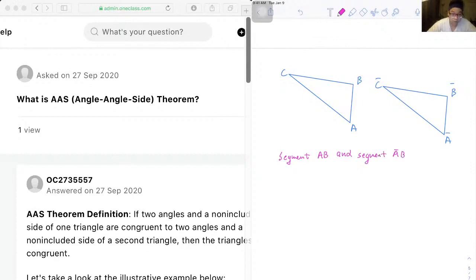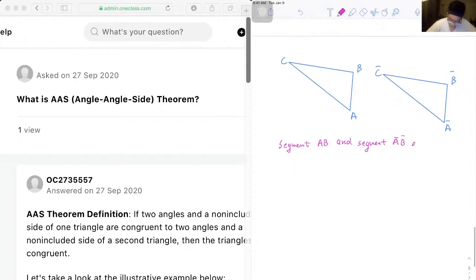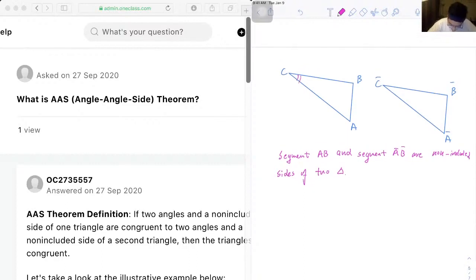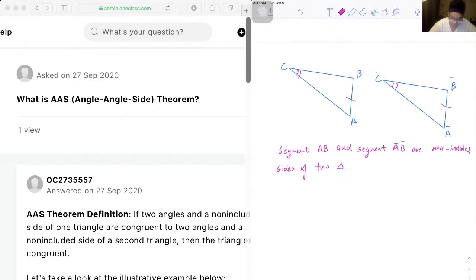and segment A bar B bar are non-included sides of two triangles. So let's label this.